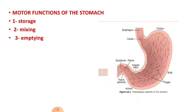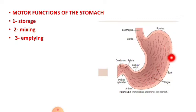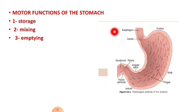Regarding the storage function, when food enters the stomach it forms concentric circles. The newest food accumulates near the junction of the stomach and esophagus, while the older food comes into contact with the wall of the stomach. As it contacts the wall, it stimulates sensory receptors which transmit signals through the sensory fibers of the vagus nerve to the brain stem.